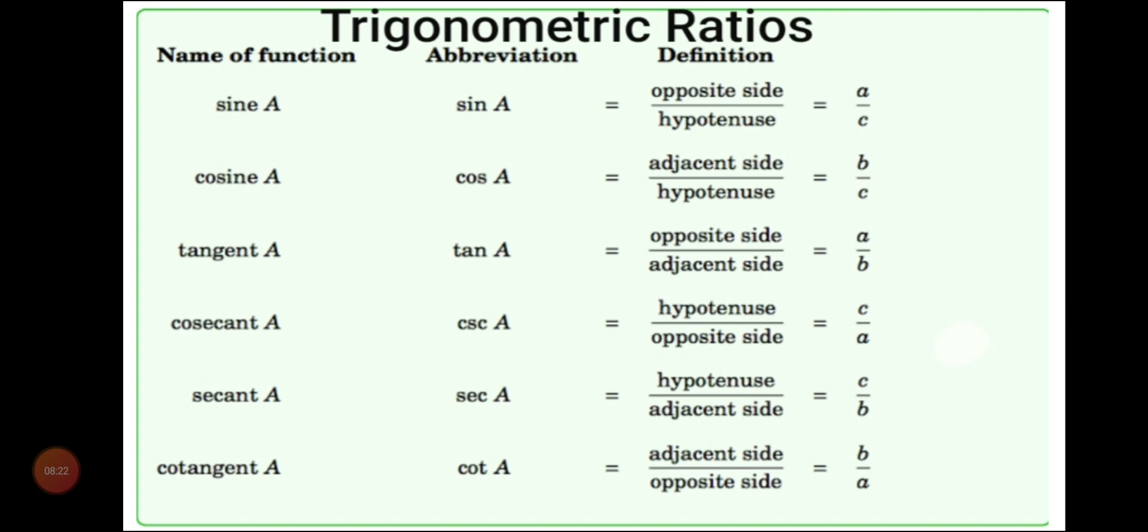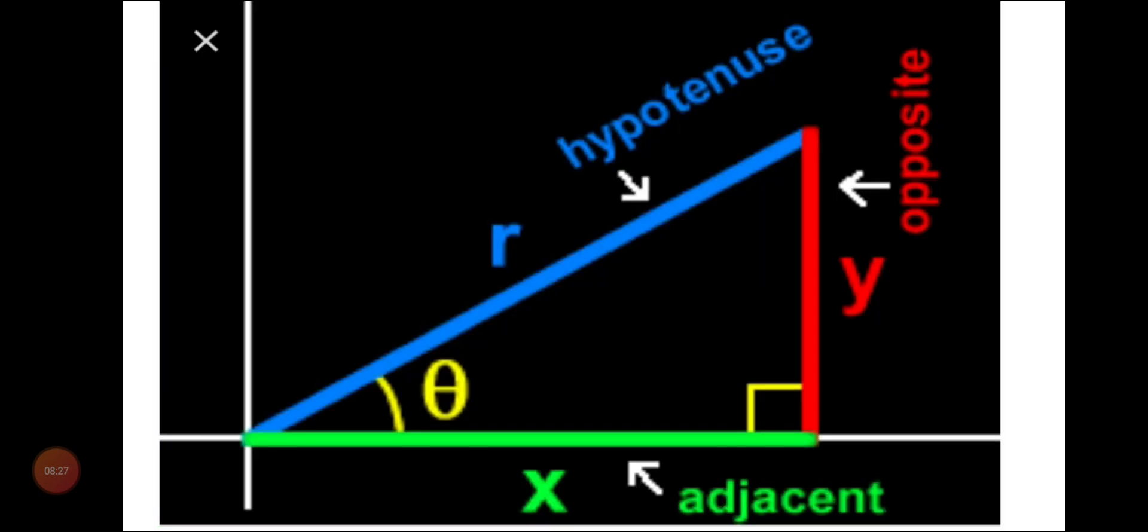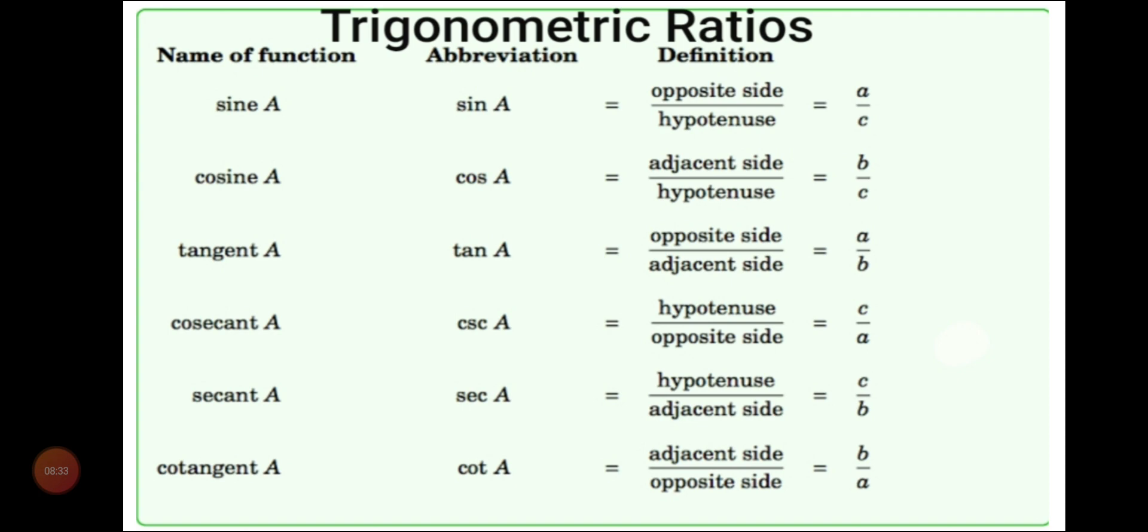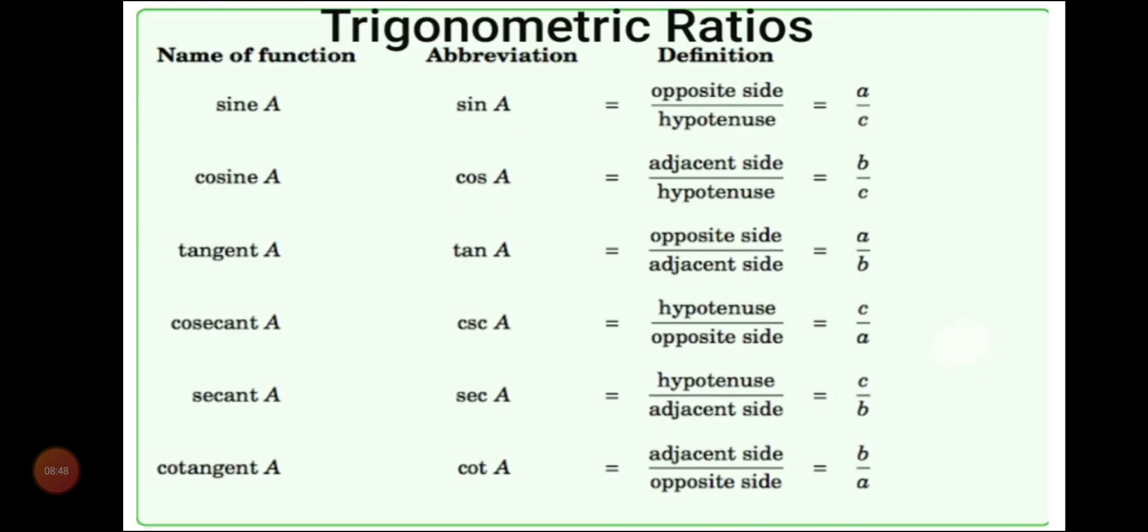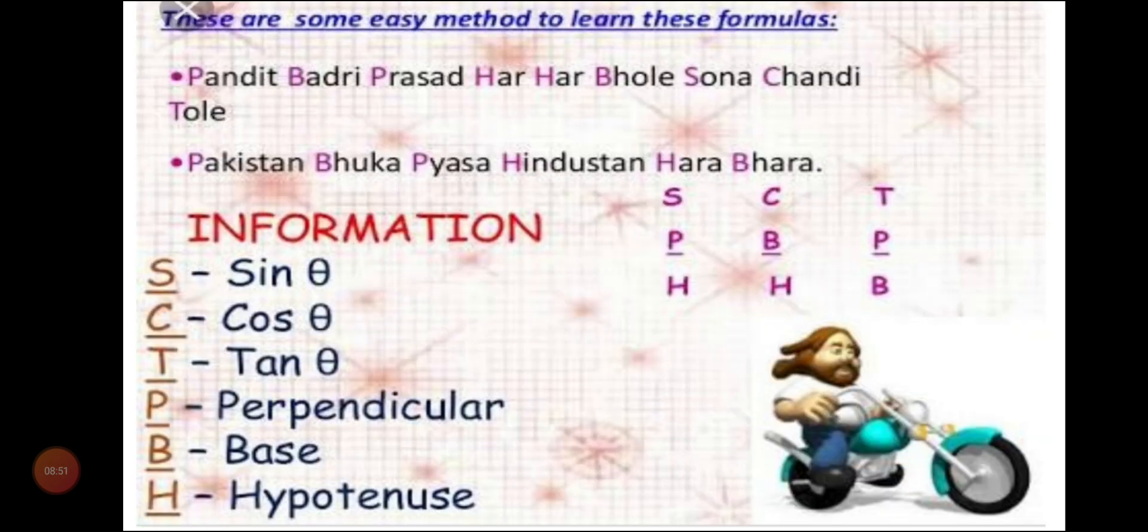And they are equal to the ratio of any two sides of a right triangle. Like, sine is equal to opposite side upon hypotenuse. As you can see, opposite side upon hypotenuse. Cos is equal to adjacent side upon hypotenuse. So, which one is adjacent side? This is adjacent side, green, upon hypotenuse, blue. So, this is very important. And, I will tell you in my next video that how to learn these ratios in very easy manner.